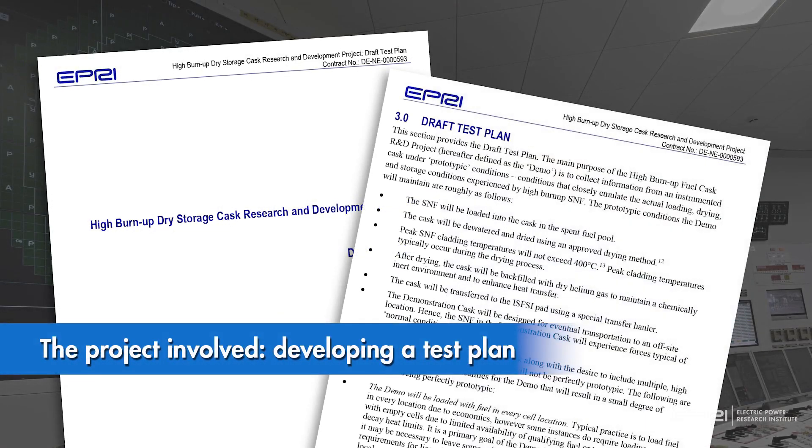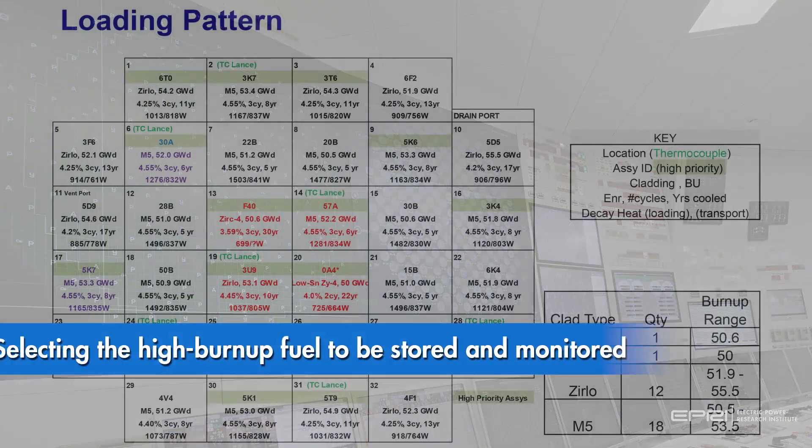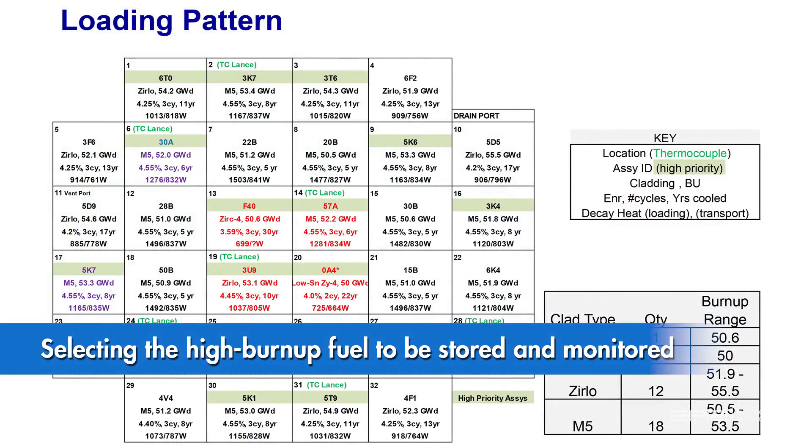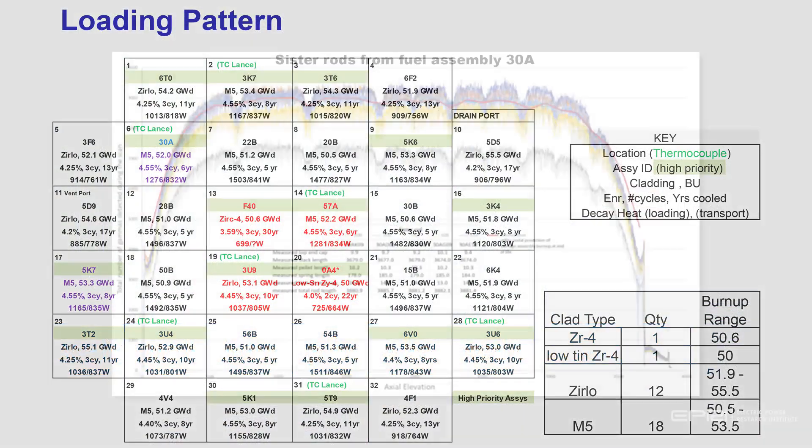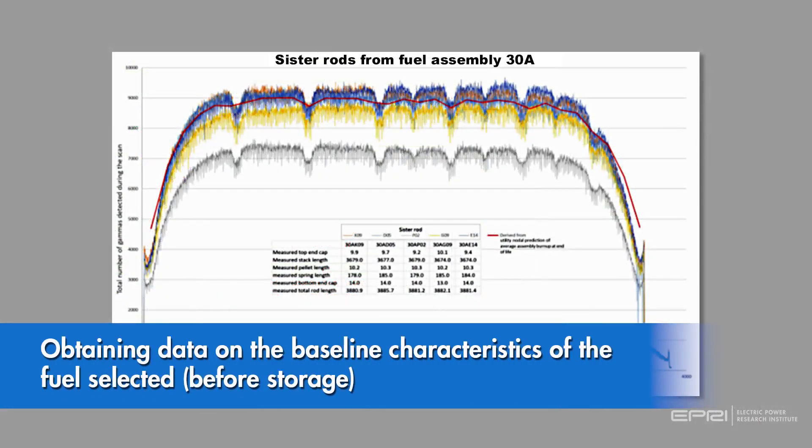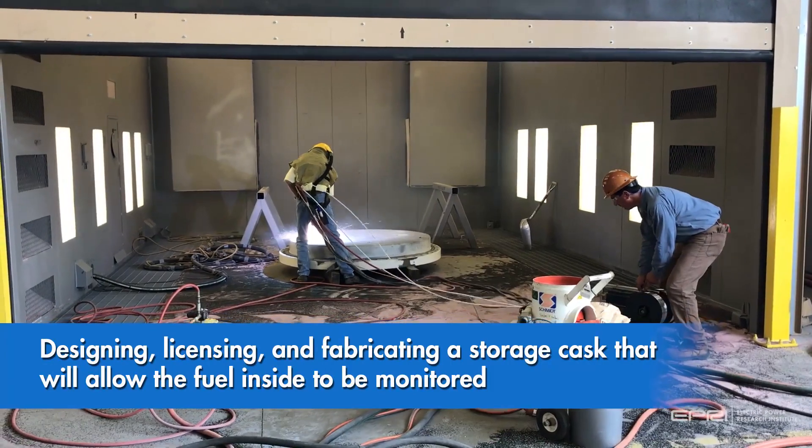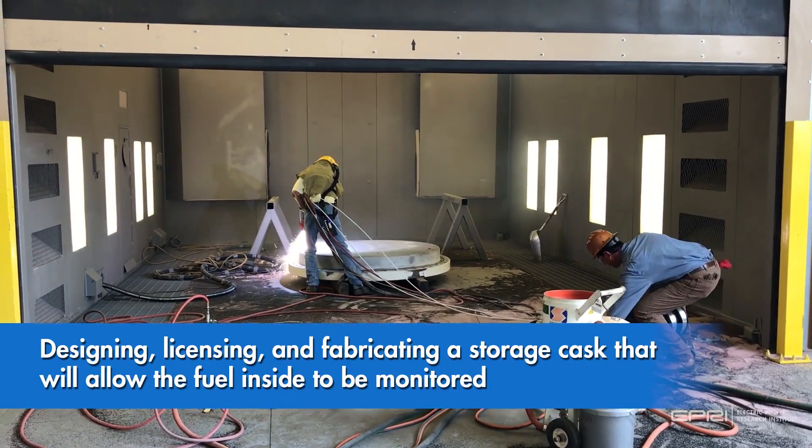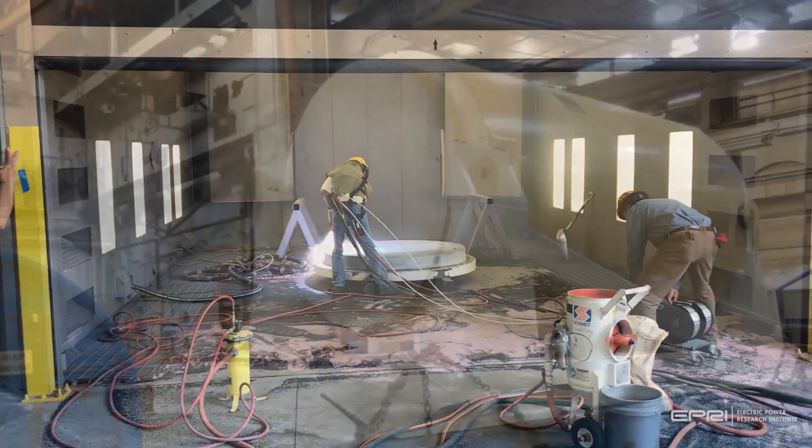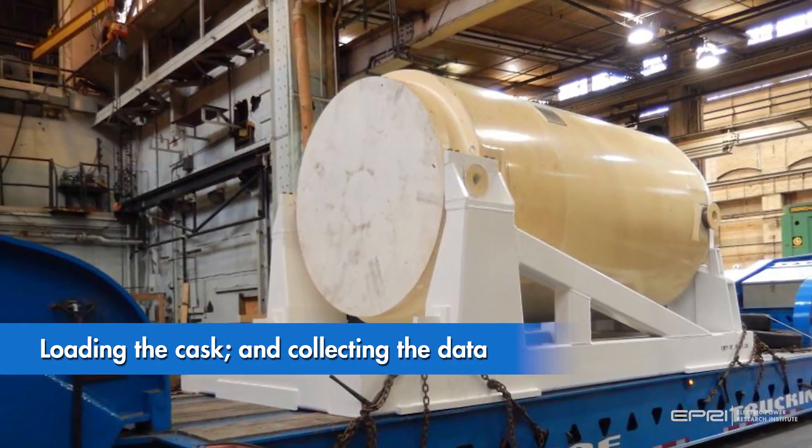The project involved developing a test plan, selecting the high burn-up fuel to be stored and monitored, obtaining data on the baseline characteristics of the fuel selected before storage, designing, licensing, and fabricating a storage cask that will allow the fuel inside to be monitored, loading the cask, and collecting the data.